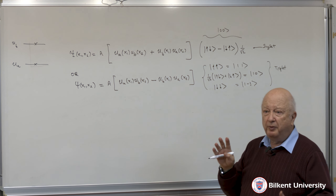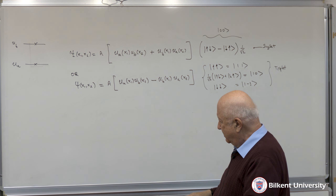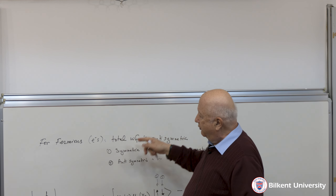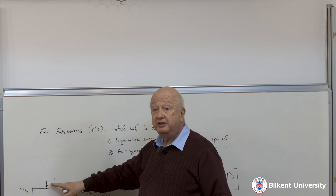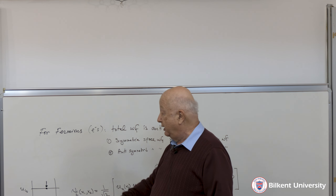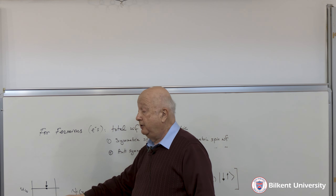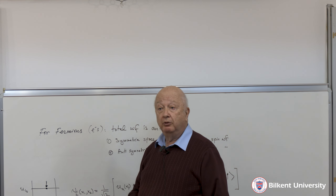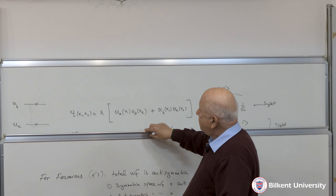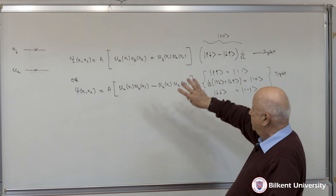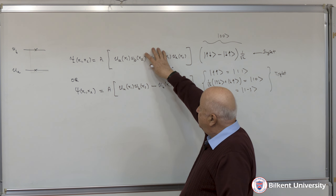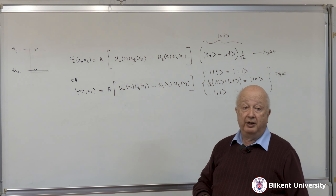So there are four possibilities. And if we knew what the spins were for each one of these states, we would again get four possibilities: up-up, up-down, down-up, and down-down. Those four possibilities are now categorized somewhat differently: space part symmetric or space part anti-symmetric.